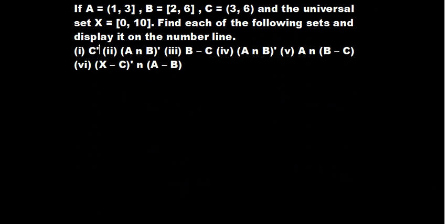We have set A moving from 1 to 3, set B from 2 to 6, and set C from 3 to 6. For A: the first bracket is curved so 1 is not part of A, but 3 is because of a square bracket. For B: both 2 and 6 are part of B. For C: both 3 and 6 are not part because of the curved brackets. The universal set runs from 0 to 10 where both 0 and 10 are included.